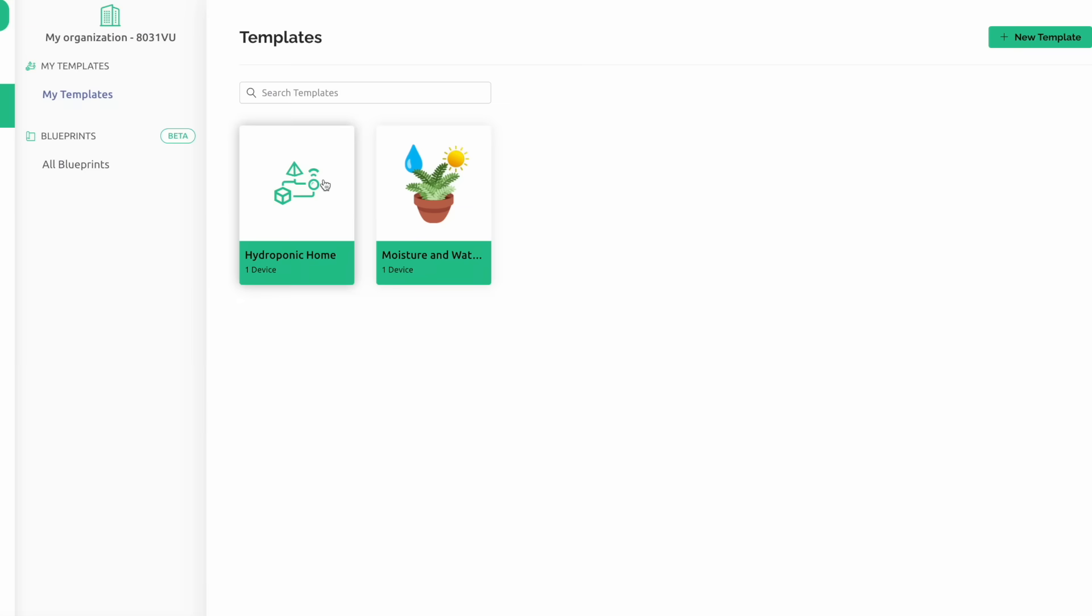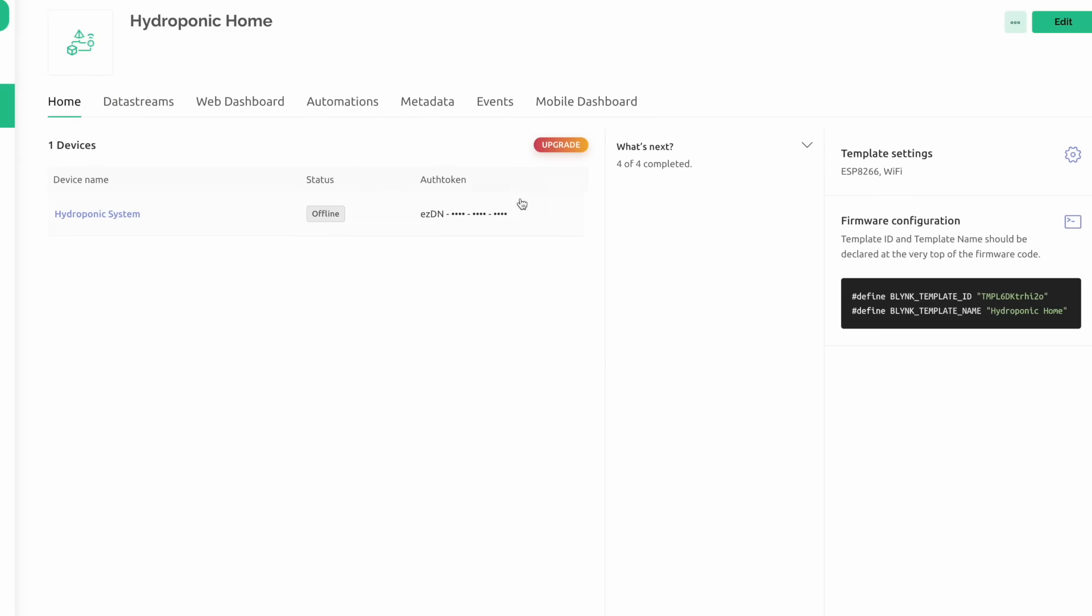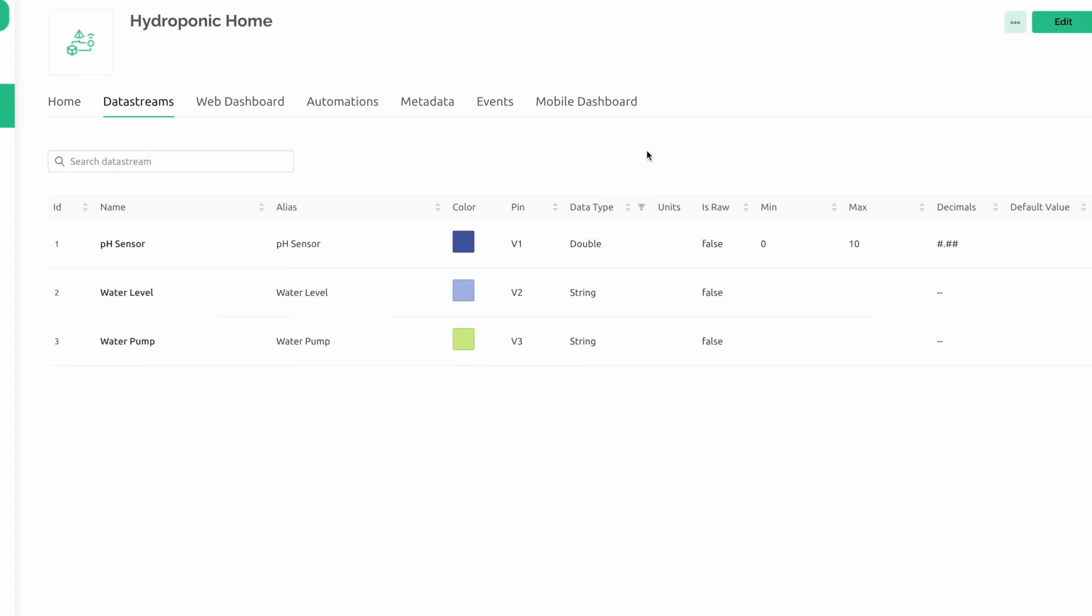After logging into Blink, create a template and get the unique token address, template name, and template ID. Then create three virtual pins, a double data type for the pH sensor and a string data type for the status of the level sensor and the motor.